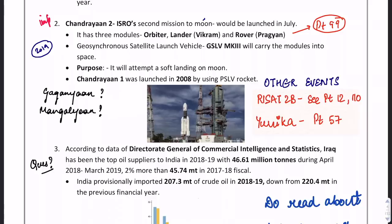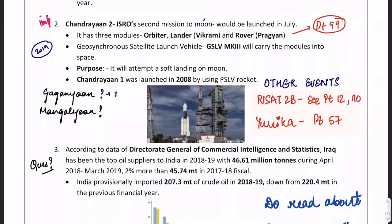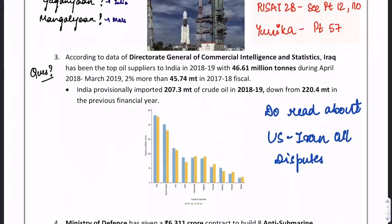Gaganyaan is related to India's first human spaceflight mission. Mangalyan is related to Mars, and Chandrayaan is related to the Moon.